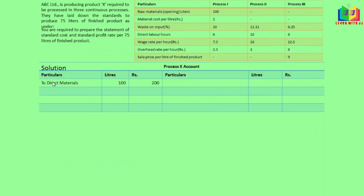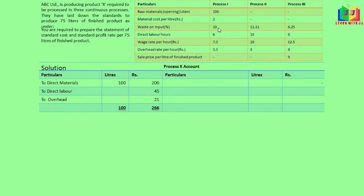Starting with Process X: materials are 100 liters at 2 rupees per liter, giving 200. Direct labor is 6 hours at a wage rate of 7.5, so 6 into 7.5 equals 45. Overhead rate is 3.5 per hour, so 3.5 into 6 gives 21 for overhead charges. Wastage is 10 percent on the input of 100 liters, giving 10 liters. There is no scrap value for these 10 liters, so no amount is entered.